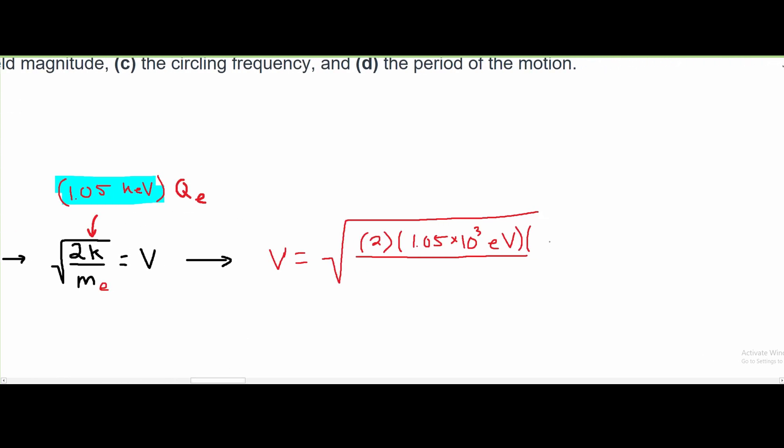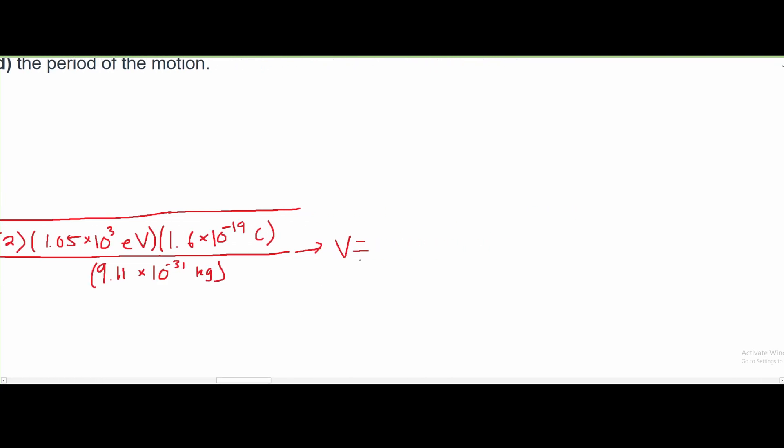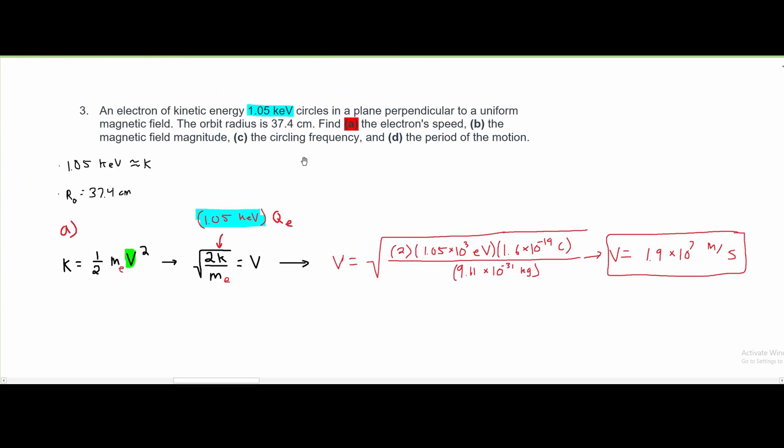And the charge of an electron is 1.6 times 10⁻¹⁹ coulombs. And the mass of an electron is approximately 9.11 times 10⁻³¹ kilograms. And this is going to give us the speed of approximately 1.9 times 10⁷ meters per second. That is our answer, the speed or velocity for part A.